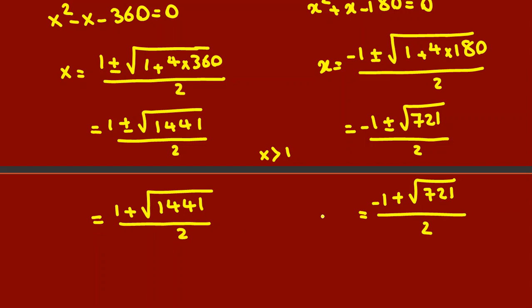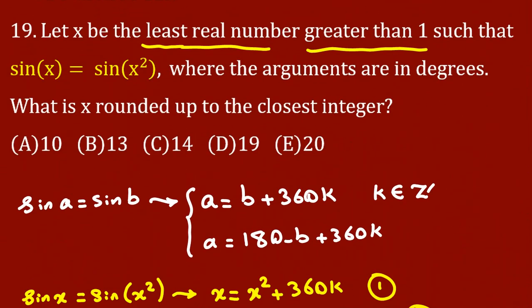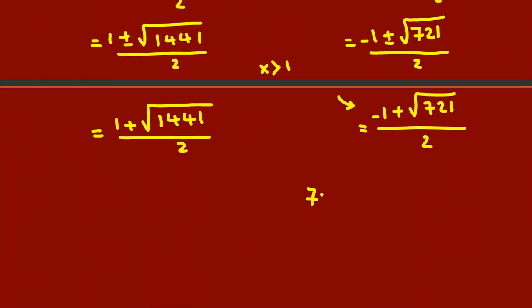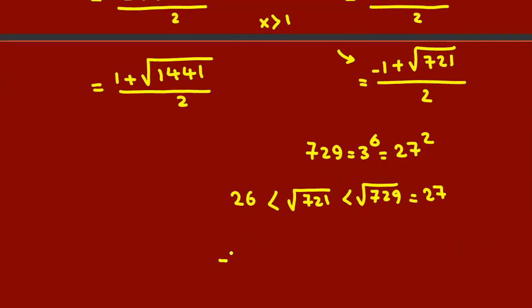We want to find minimum x. Obviously, which one is minimum? This one. Now the problem doesn't want exact x. It says what's x rounded up to the closest integer. Look, 729 is 3 to the 6, which is 27 squared. We understand 721 is less than 729, which is 27. The square root of this is greater than 26, because 26² is less than 721. We can say x equals (negative 1 plus square root of 721) over 2.